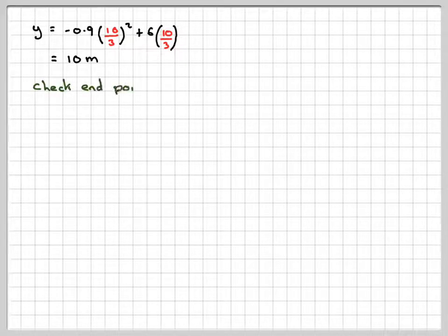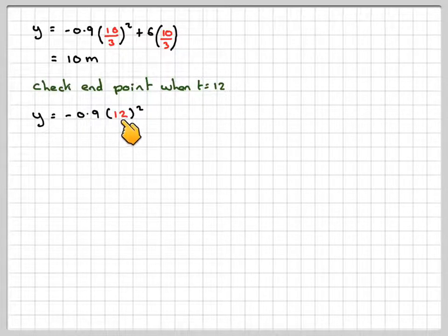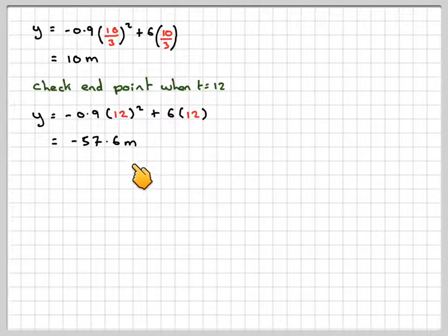Then we need to check the end point. We don't need to check 0, but we need to check when t equals 12. So y equals minus 0.9 times 12 squared plus 6 times 12, and that gives me minus 57.6 metres.